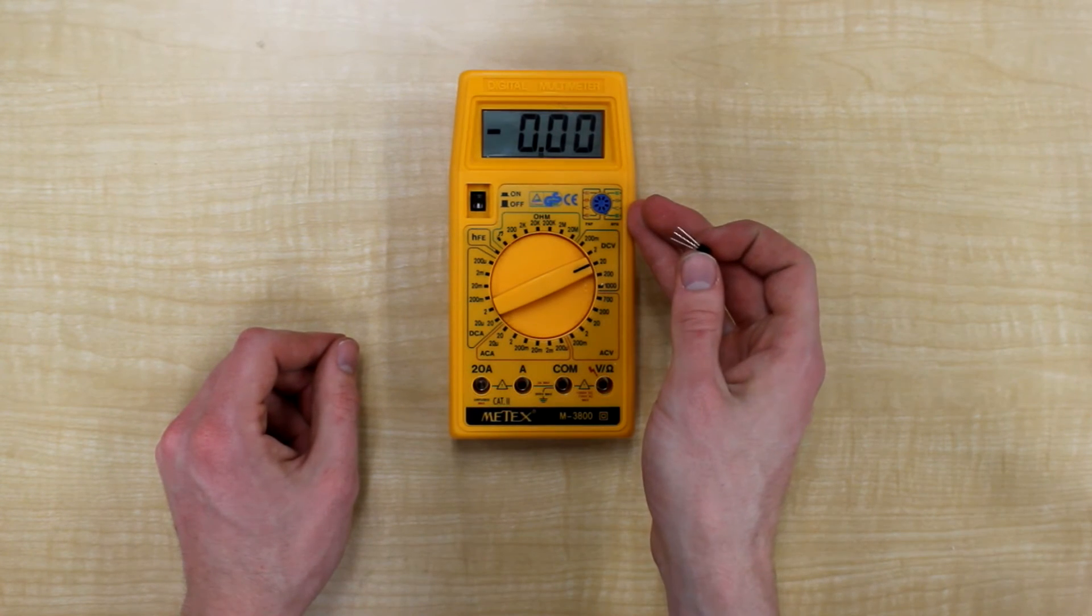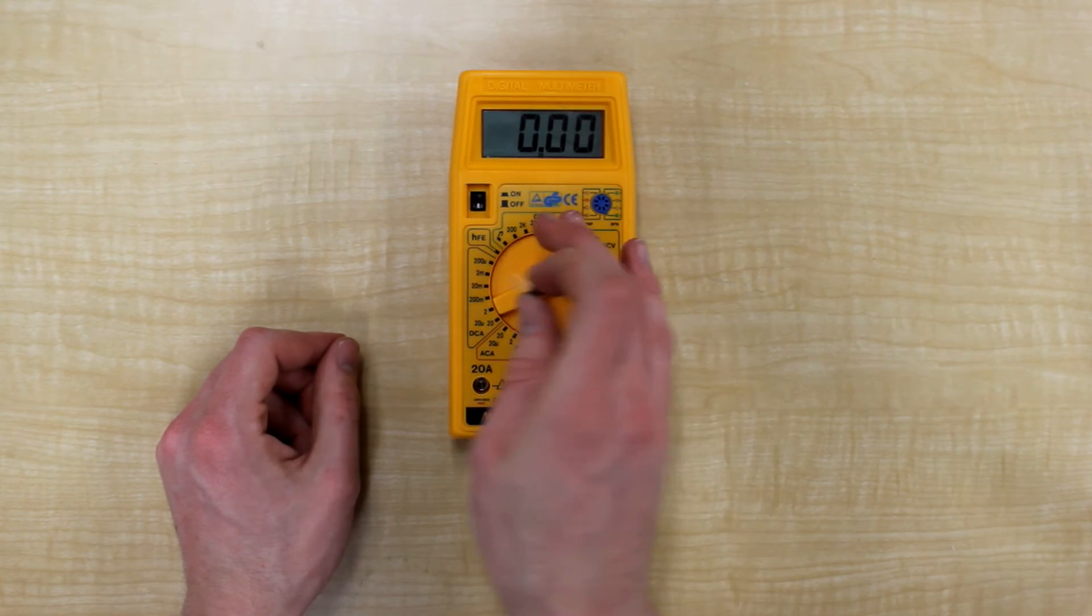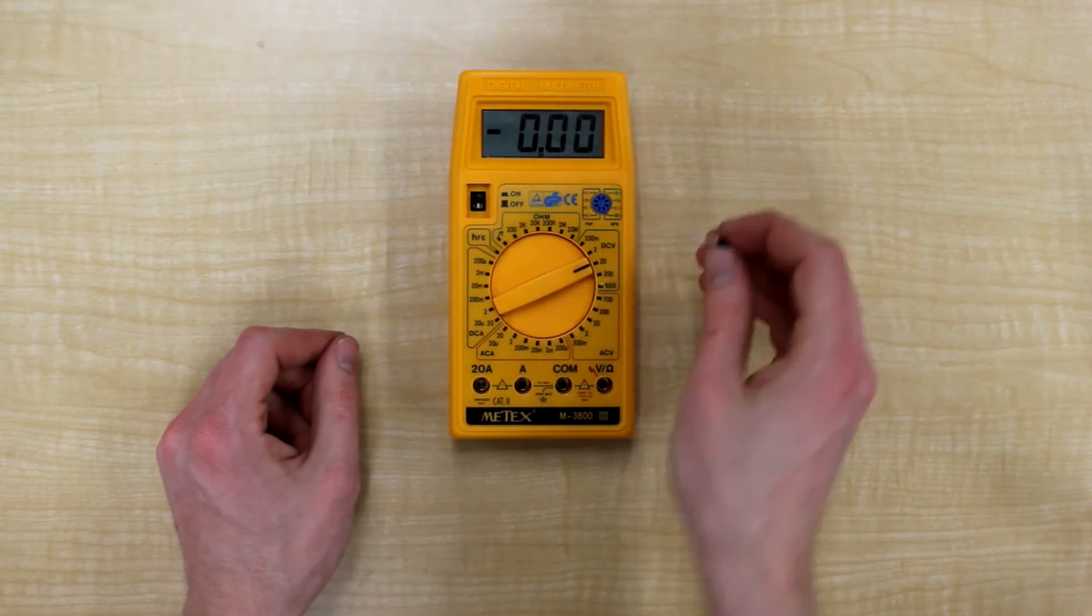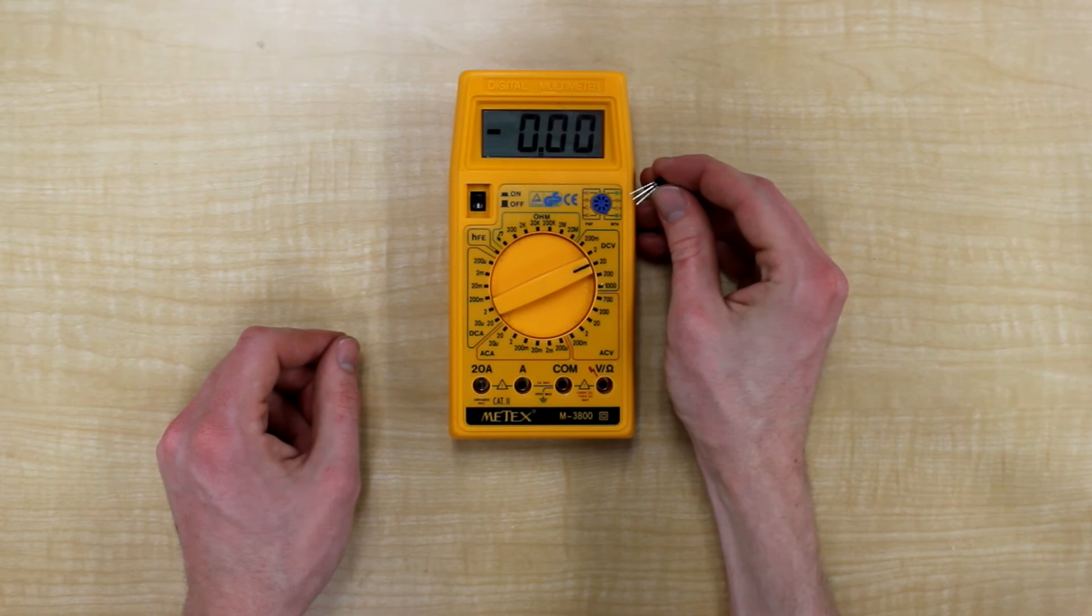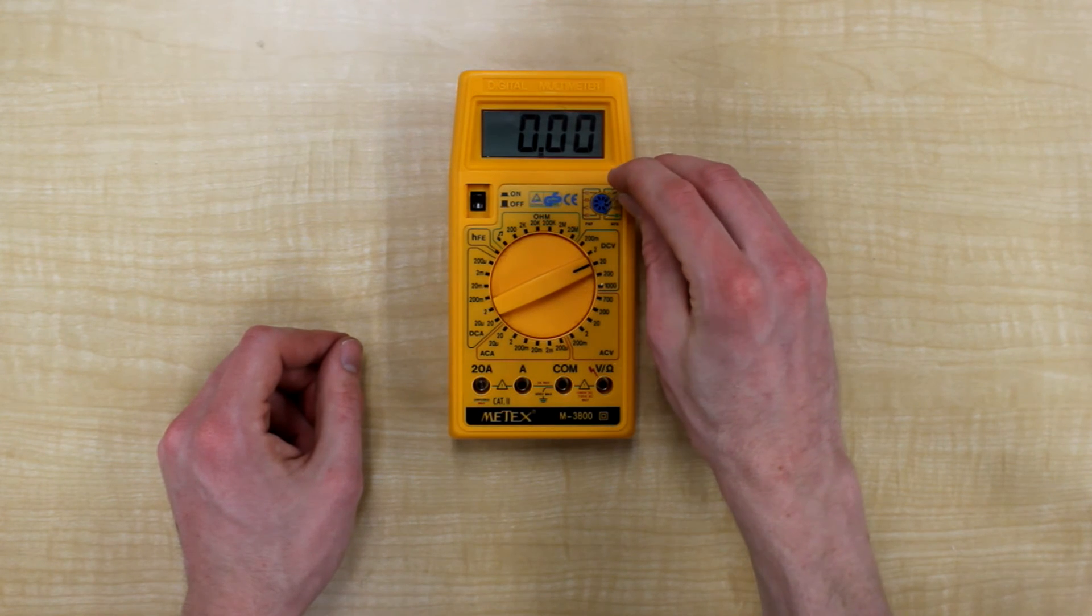If it is an NPN, put it on the right side of the blue circle, or if it is a PNP, put it on the left side of the blue circle. And put the emitter into the point marked E, the base into the point marked B, and the collector into the point marked C.